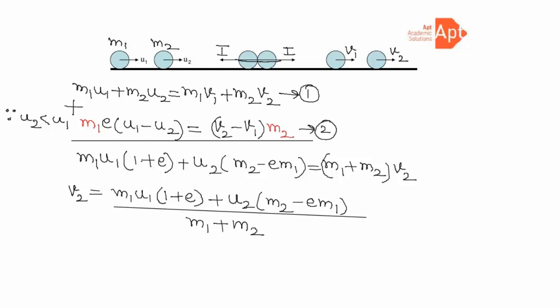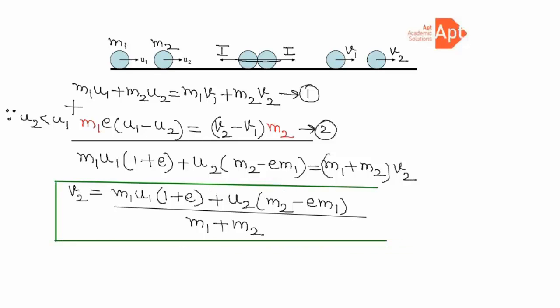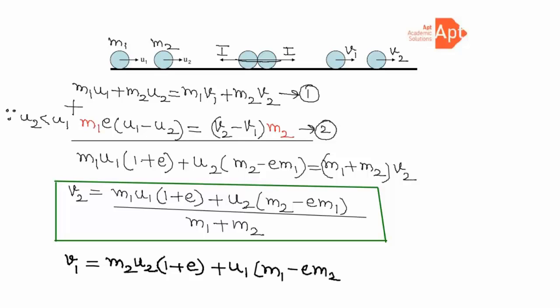We now have the expression for v2. To find v1, we simply interchange the subscripts 1 and 2 in the formula, giving: v1 = [m2·u2·(1 + e) + u1·(m1 − e·m2)] / (m1 + m2).